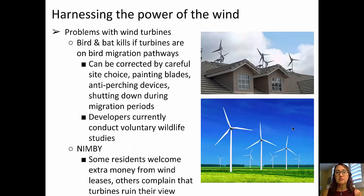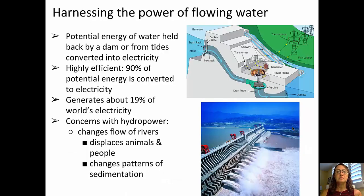Wind power does have some concerns. These include bird and bat kills if turbines are located in bird migration pathways. Those can be corrected by carefully choosing sites, painting blades, having anti-perching devices, and shutting them down during peak migration periods. Developers are also voluntarily conducting studies of wildlife patterns. And then there's always NIMBY — not in my backyard — where some residents welcome the extra money from wind leases while others complain that wind turbines ruin their view.